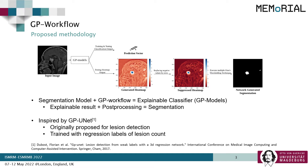During inference, if the pooling is not applied, the output is a set of class heatmaps. By inspecting these heatmaps, the focus area of the model can be understood, making the model explainable. Then the suppressed heatmaps are obtained by removing the negative values and focusing only on the positive attributions of the network. Then OTSU's thresholding method is applied to obtain the final segmentation. This way, not only is the model inherently explainable, but it can also be used to obtain segmentation in a weakly supervised manner.